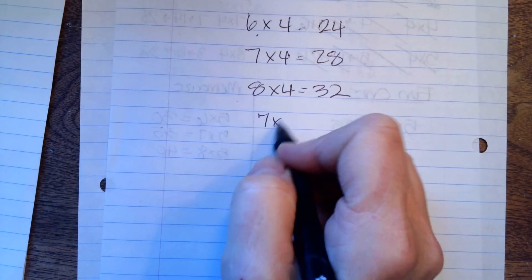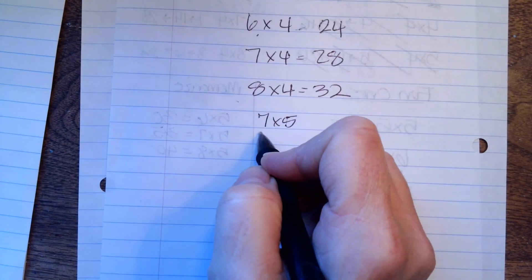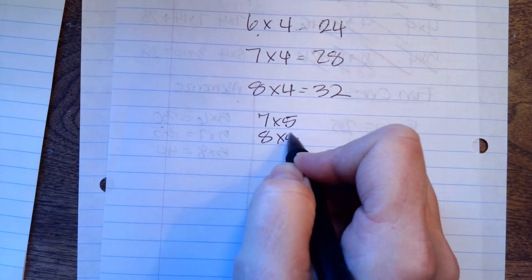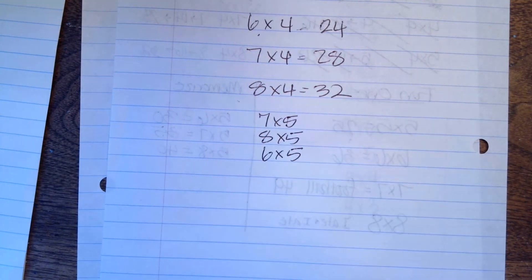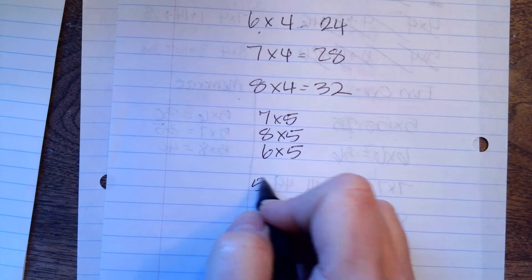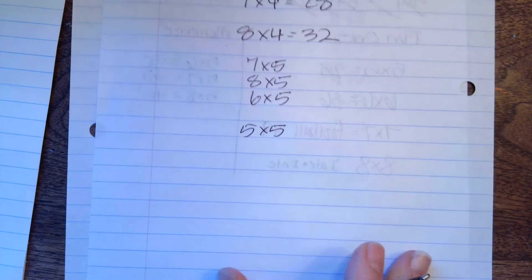7 times 5 is 35. 8 times 5 is 40. 6 times 5 is 30. 5 times 5 is 2 fives, 25.